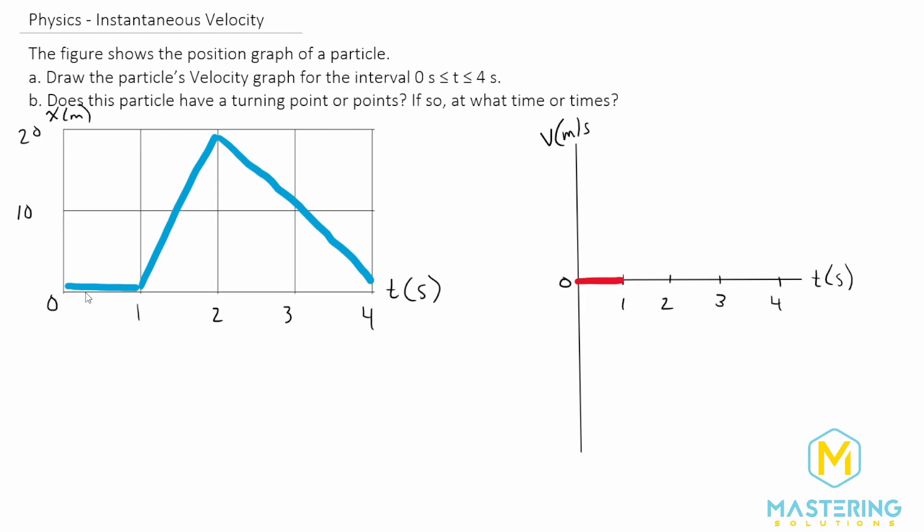So from zero to one, we go from zero meters position all the way up to 20 in just one second. So if you remember, the equation for velocity is the change in x or the change in position over the change in time. So our change in position, as we just said, is 20 meters over one second. So that gives us 20 meters per second. So we're going to jump all the way right here up to 20 for one second.